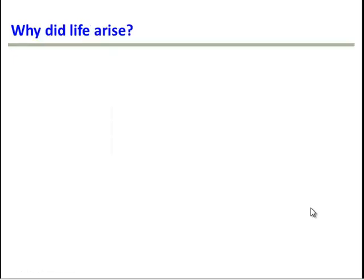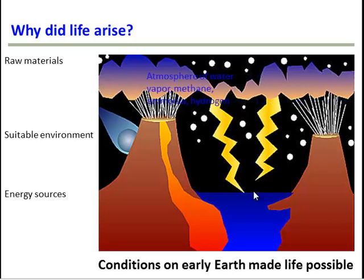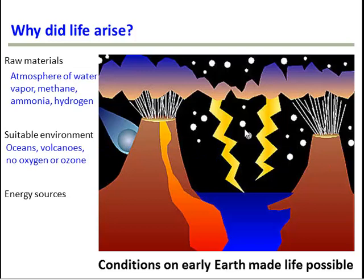So why did life arise? Well, in a nutshell, the conditions on early Earth made life possible. Several billion years ago, the Earth looked a lot different than it does today. The raw materials present then included an atmosphere made of water vapor, methane, ammonia, and hydrogen — very different from today's atmosphere, which is mostly nitrogen with some oxygen. Note that back then, before life evolved, there was no oxygen in the atmosphere, and that was very helpful for the evolution of life.